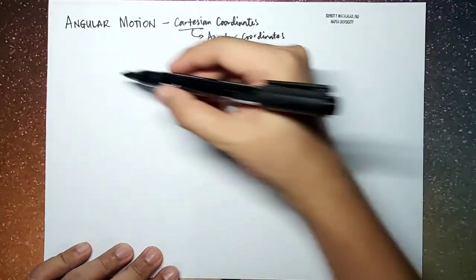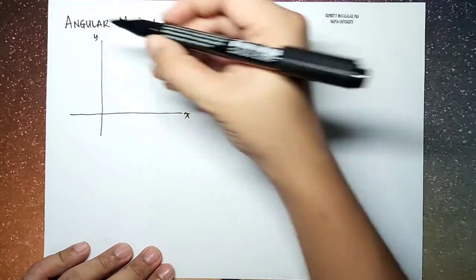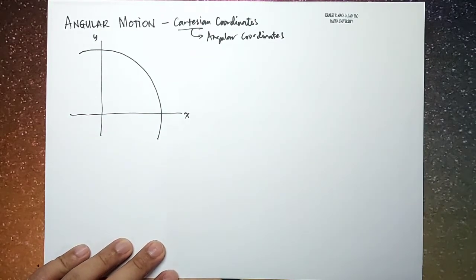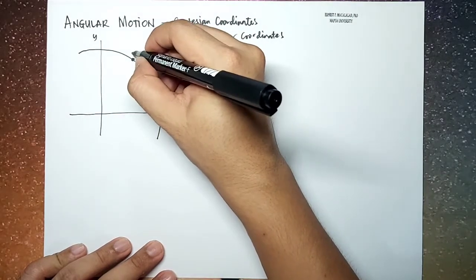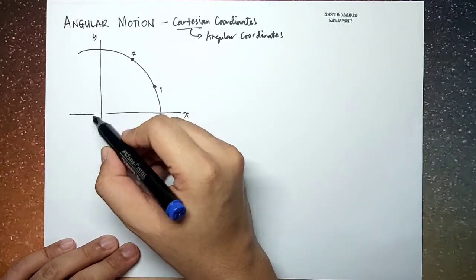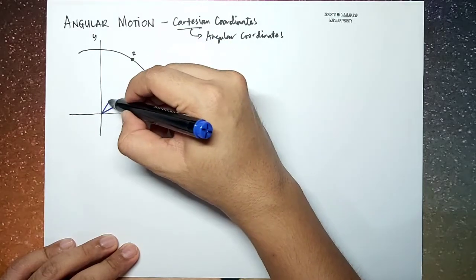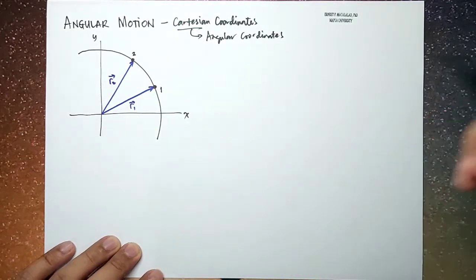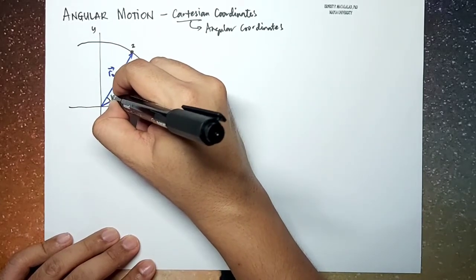Let's consider a particle in a two-dimensional Cartesian coordinate system x and y. This is the section of a circular or angular path. The particle moves from point one to point two. We define two position vectors r1 and r2. r1 is defined by angular position theta 1, and r2 is defined by angular position theta 2.